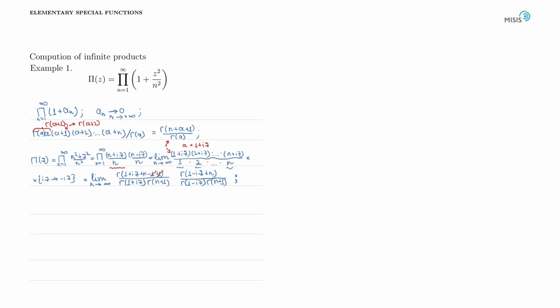To progress further, let's prove one more beautiful and very useful identity. We want to prove that the gamma function of (a + n) divided by the gamma function of n behaves as n^a when n tends to infinity.